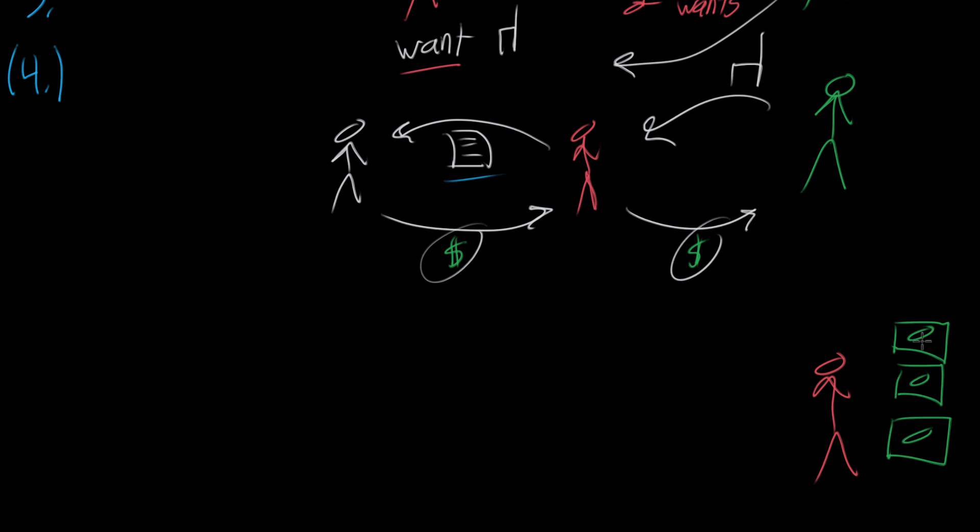You want to actually start storing value and saving it up. Well, in this barter economy, you would have to find something, since money doesn't exist, you would have to find something of value and start storing that. Maybe chairs might hold their value so you're hoping to store them or maybe you have to buy land or something that you think will store it. But there's not kind of a good de facto medium that you can do it for.